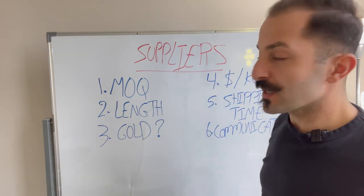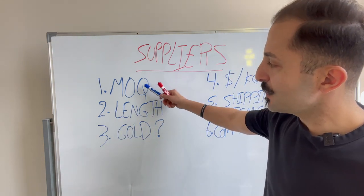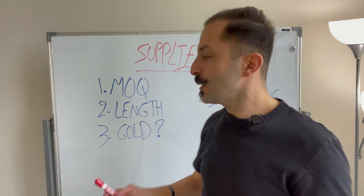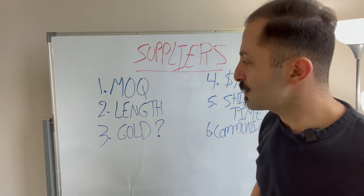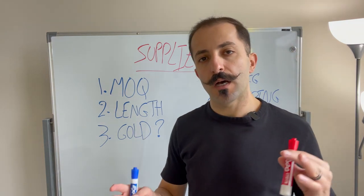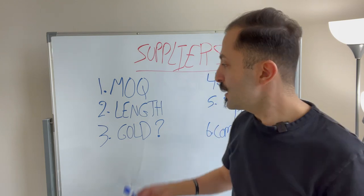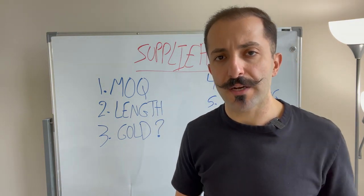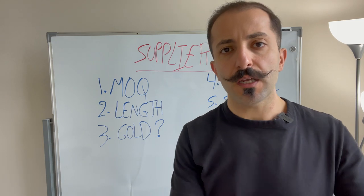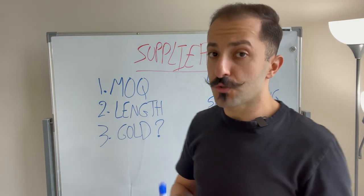I have a few things that I want to cover here. So let's go ahead and get started with these two things before we jump into the MOQ, and I'll explain what that means. One thing that people often miss when negotiating with suppliers is how long has this person been a supplier. Why does the length of time a supplier has been in business matter to you?